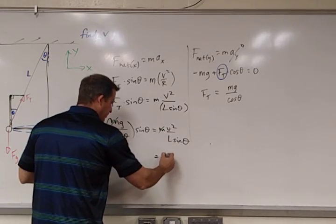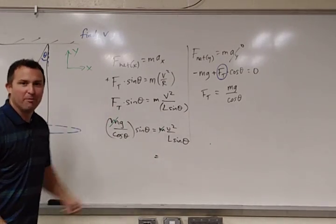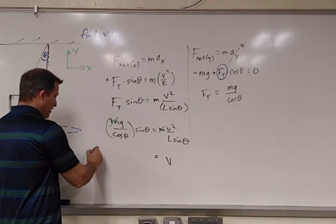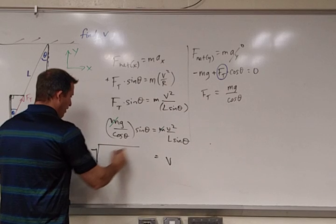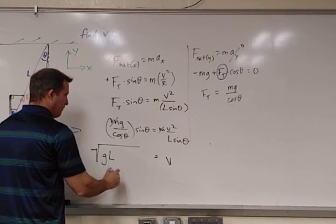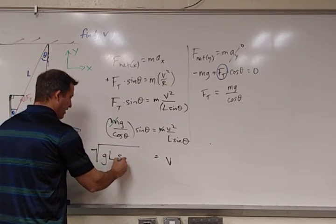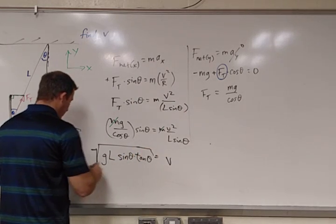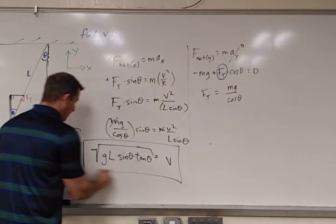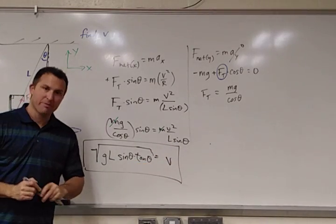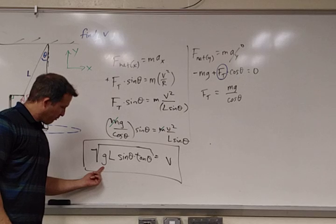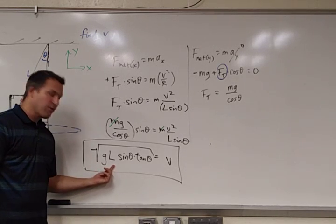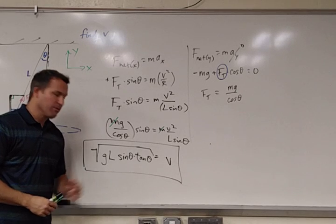So I'm going to get v here, and that's going to be, let's see, the square root of gl, and then I'll have sine theta times the tangent of theta, all inside of this square root. So you can double-check those algebra steps, but this, let's see here. We know the value of g, of course, we'll use 10 in our exams. The length was given, and the angle here was given.